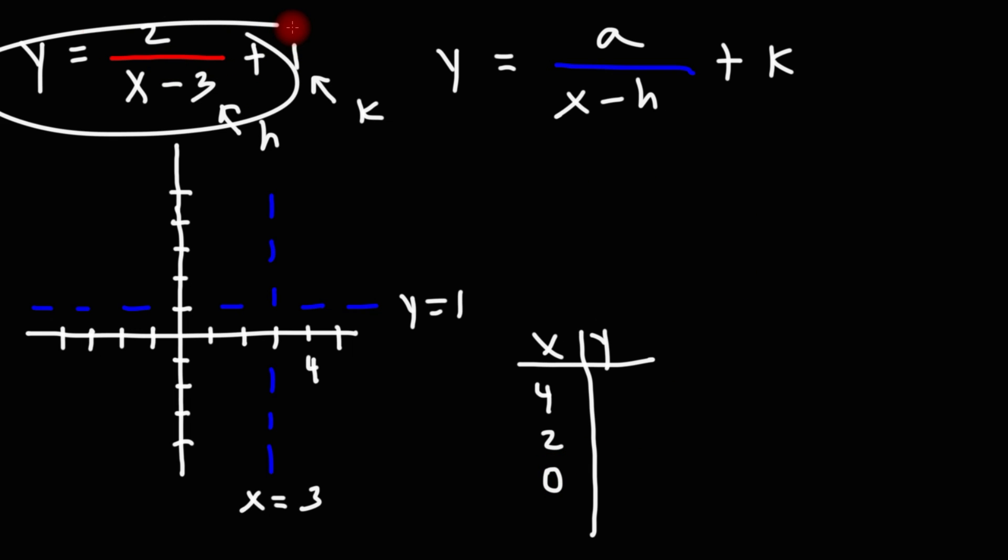So plug in the numbers into this equation. Starting with 4, we have y equals 2 over 4 minus 3 plus 1. 4 minus 3 is 1, 2 over 1 is 2. So 2 plus 1, we get 3.